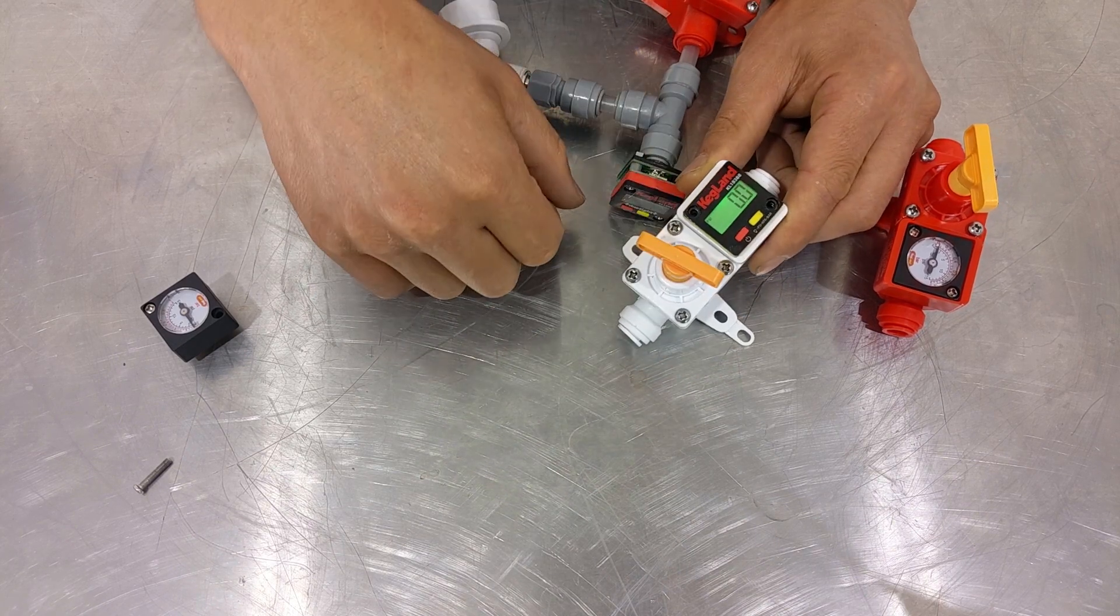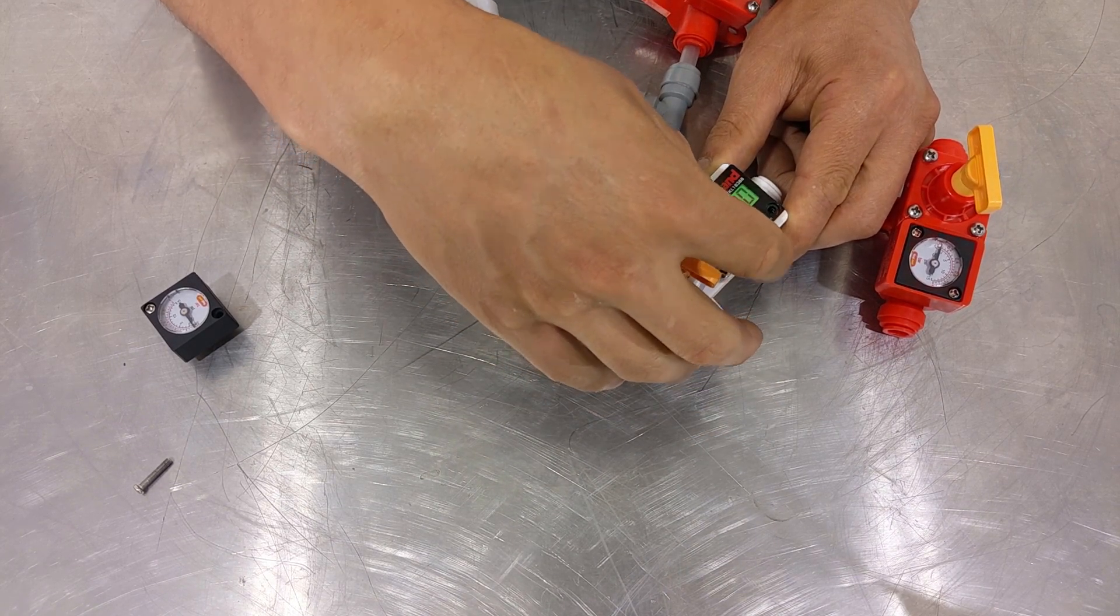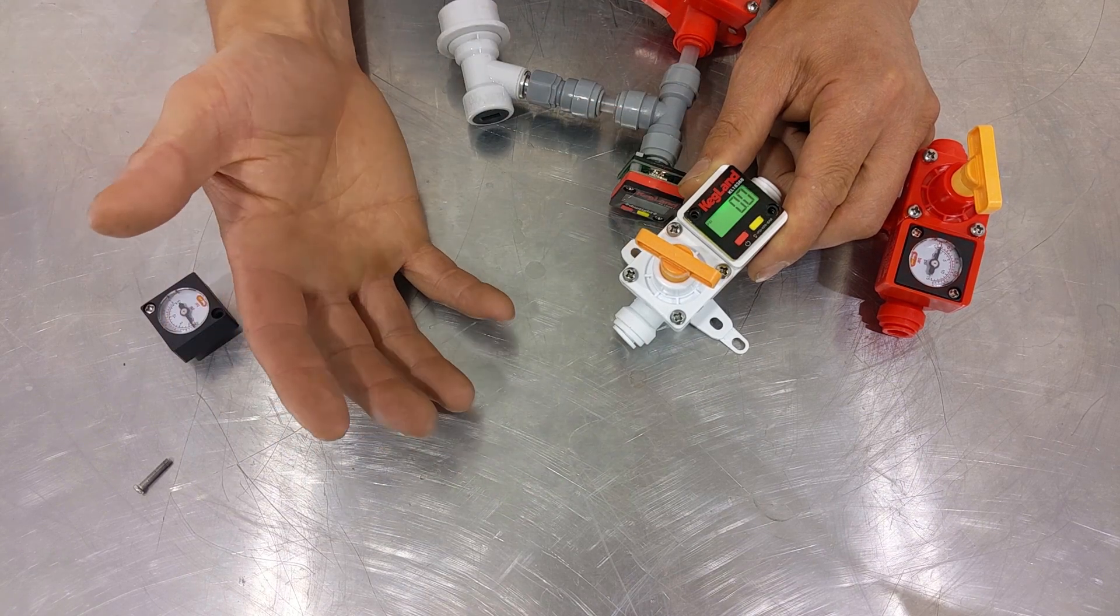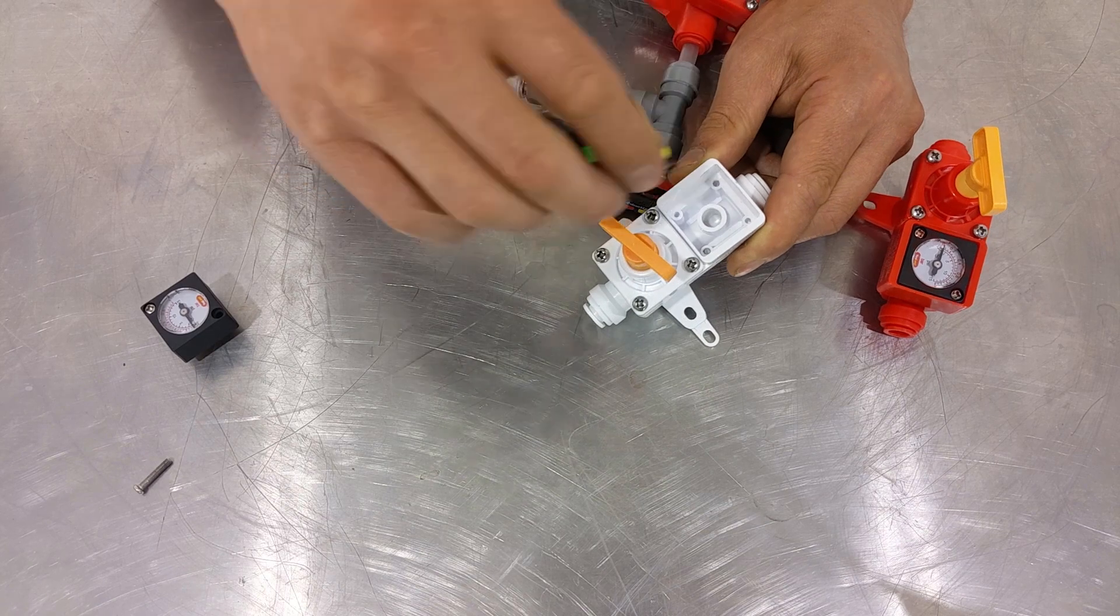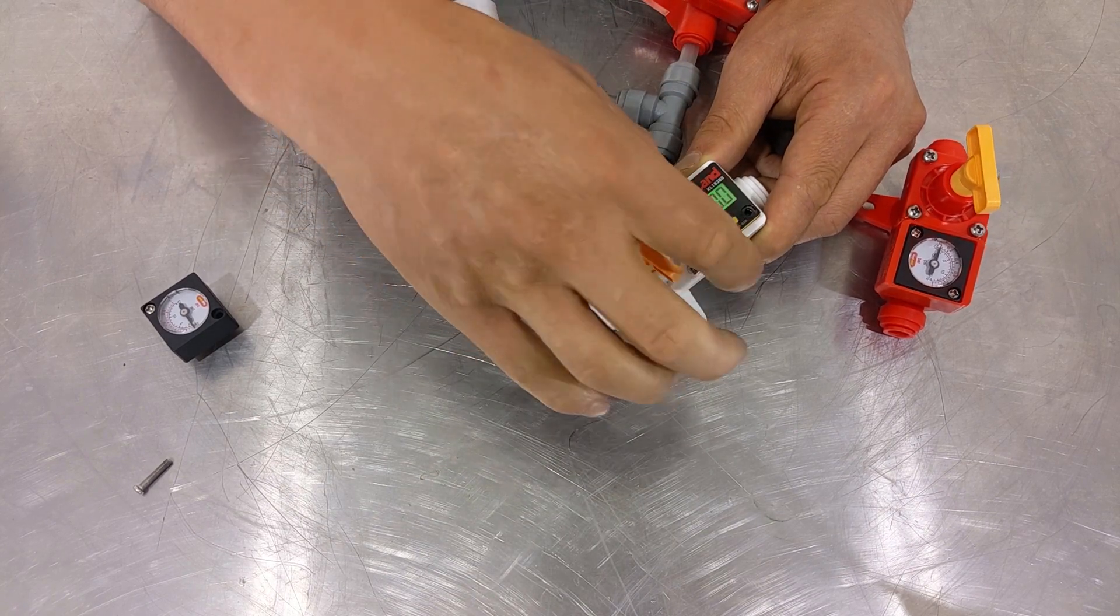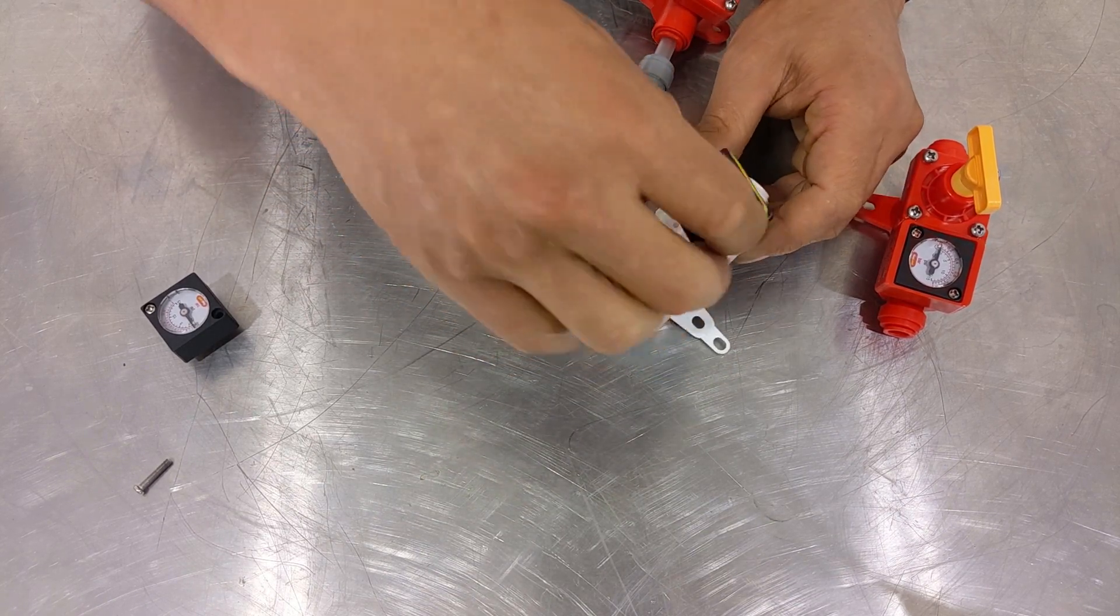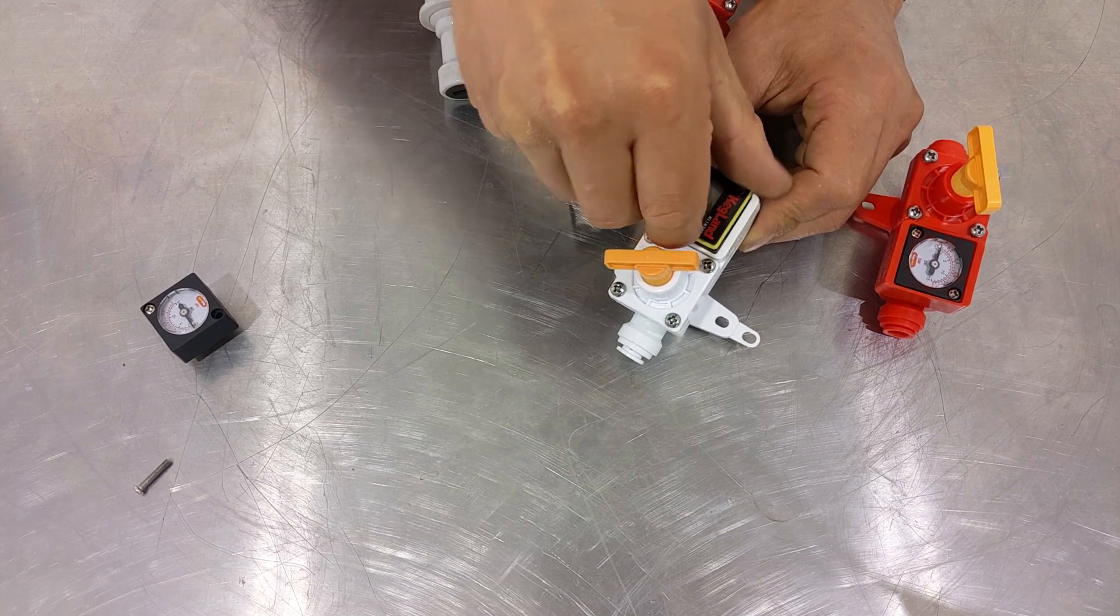When you are dropping this gauge into these little mini regulators, you notice that you've got different orientations. We've got basically four little screw holes in each corner, so you can put it in like that if you wanted to. Depending on the particular orientation, you've got four different orientations in which you can face the gauge, giving you maximum flexibility.